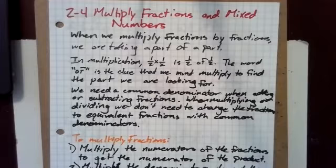In multiplication, one half times one half is one half of one half. The word 'of' is the clue that we must multiply to find the part we are looking for.